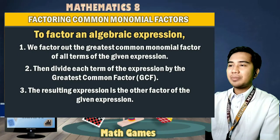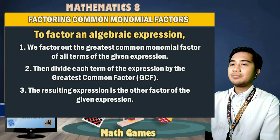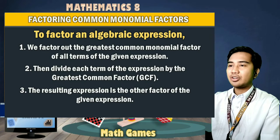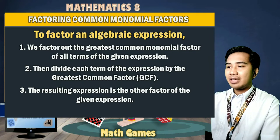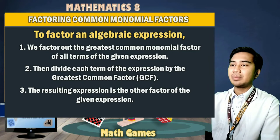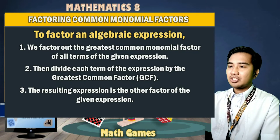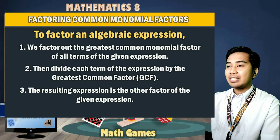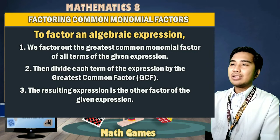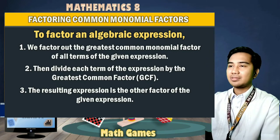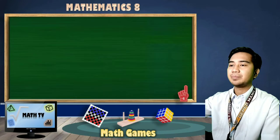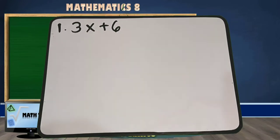To factor an algebraic expression, first we factor out the greatest common monomial factor of all terms of the given expression. Then divide each term of the expression by the greatest common factor or GCF. The resulting expression is the other factor of the given expression. So let's have these examples. Factor the following. Number 1: 3x plus 6.